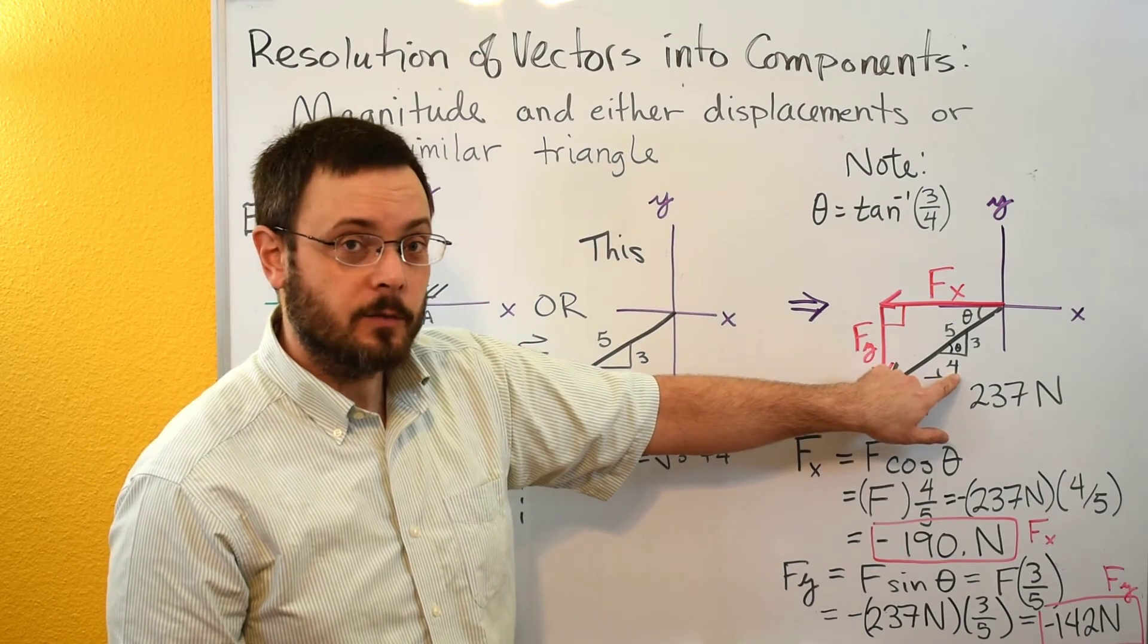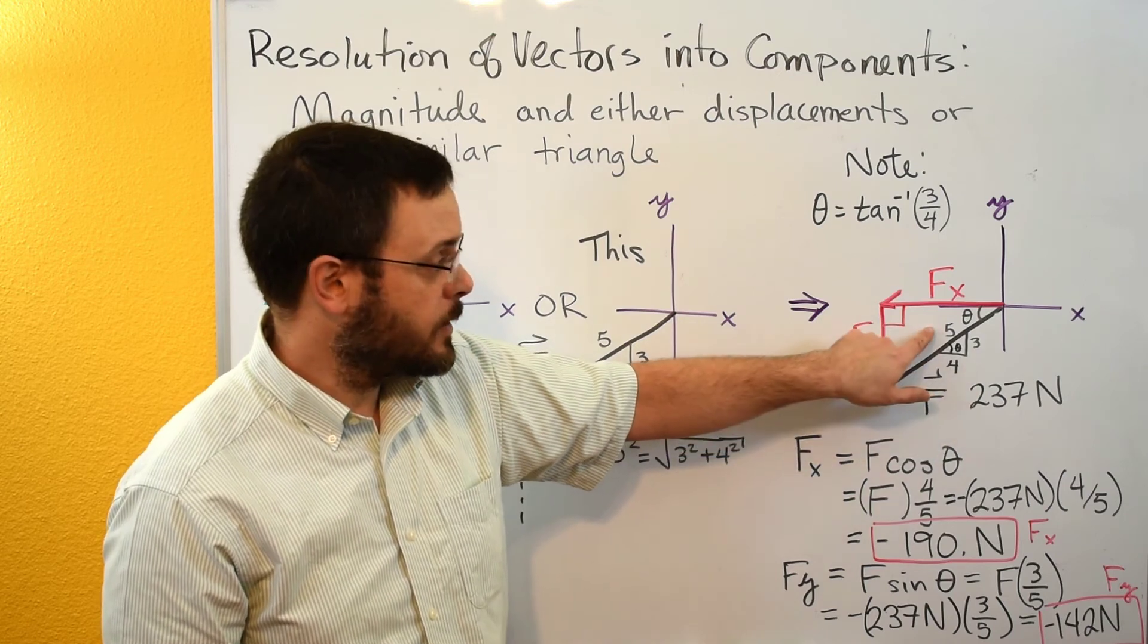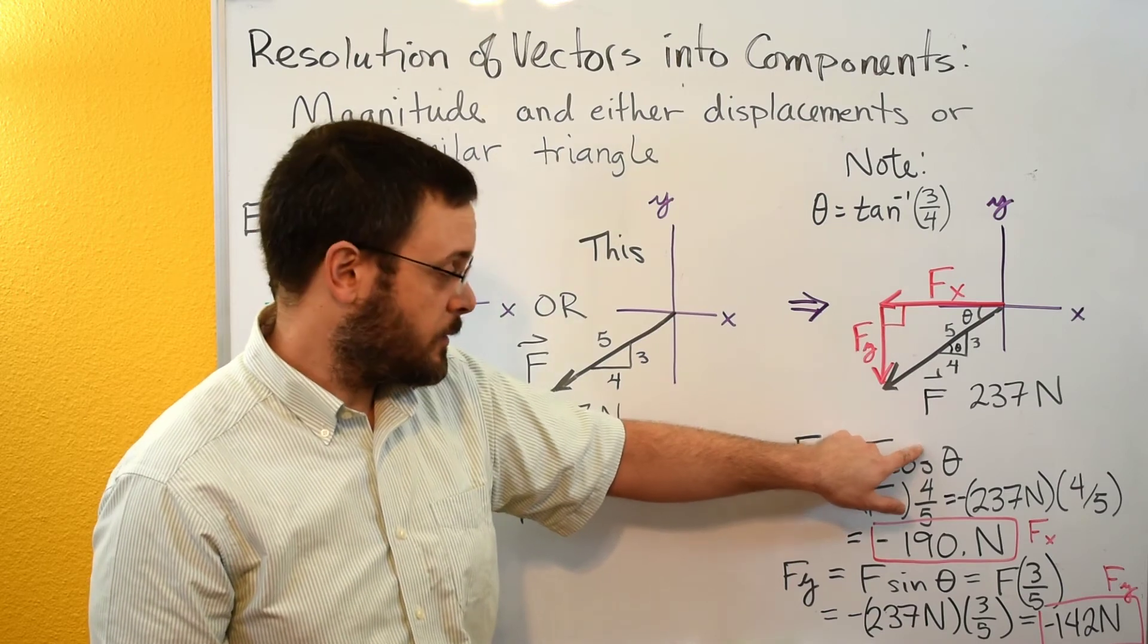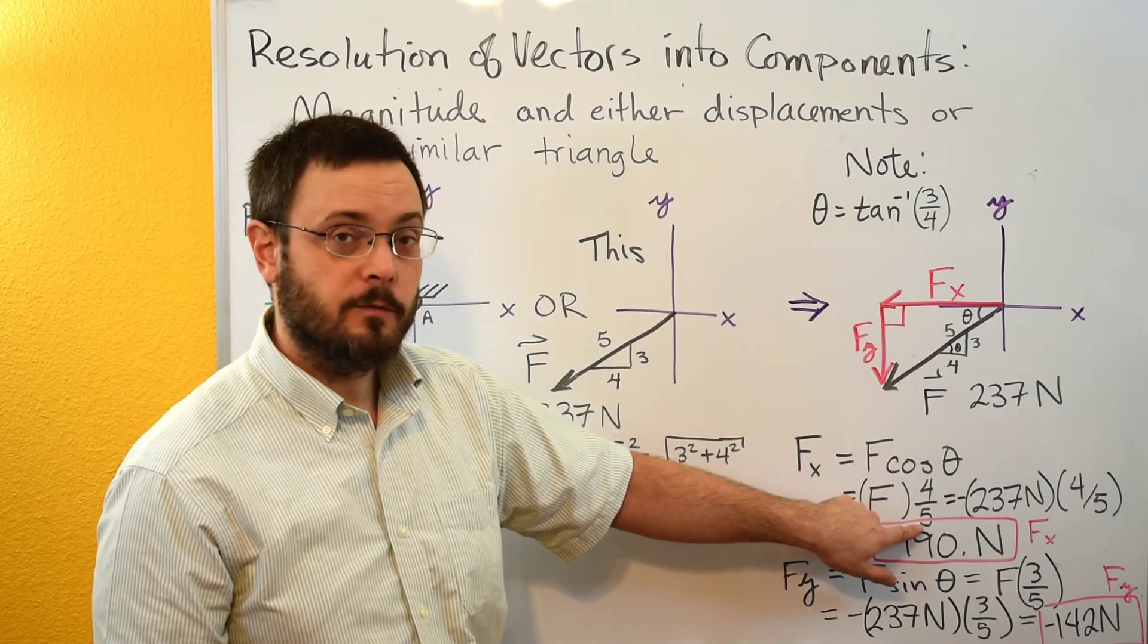And then when we're thinking about cosine of theta, that would be the 4 side, which would be the adjacent side, divided by the hypotenuse, which would be the 5 side. So we can directly replace cosine of theta with this fraction 4 fifths.